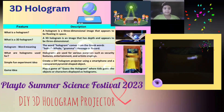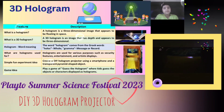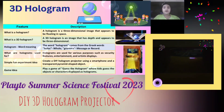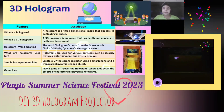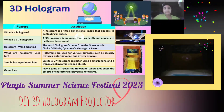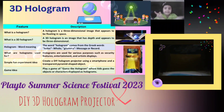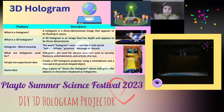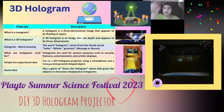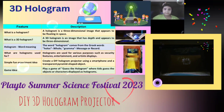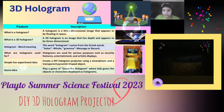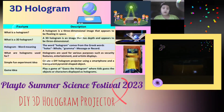So, what is a 3D hologram then? A 3D hologram is an image that has depth and appears to be three-dimensional — like the Earth shown here.